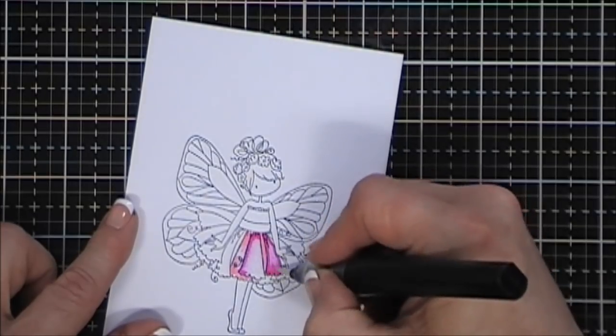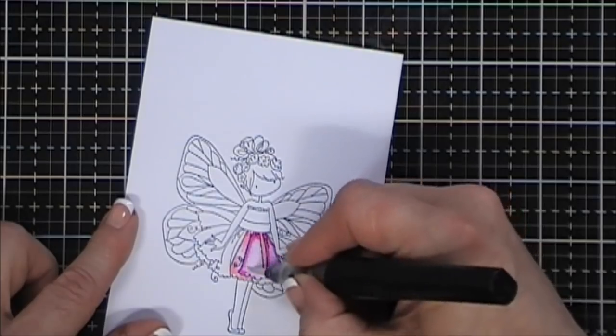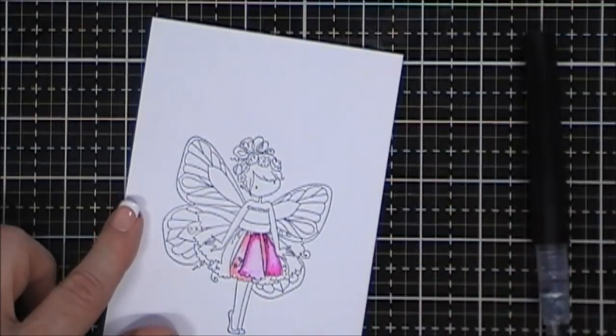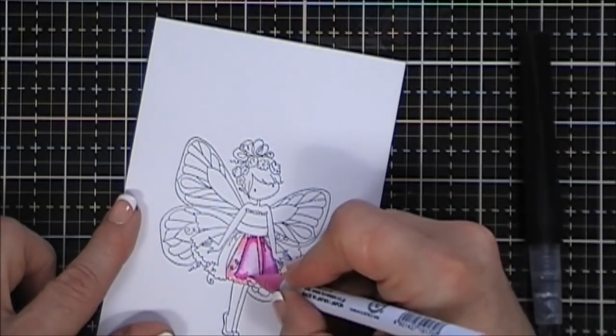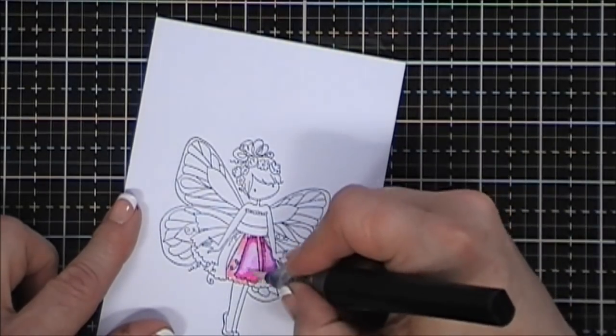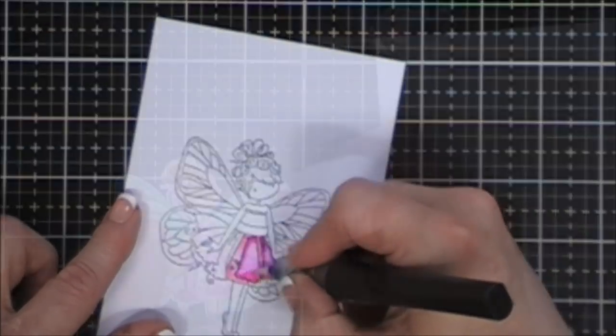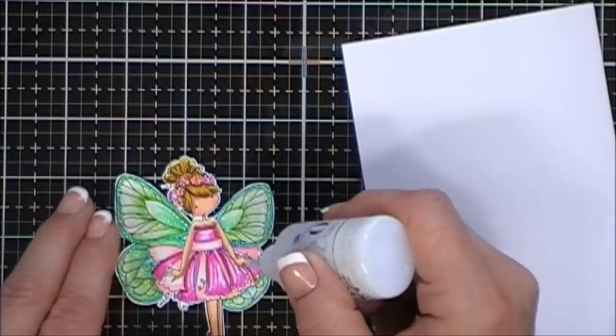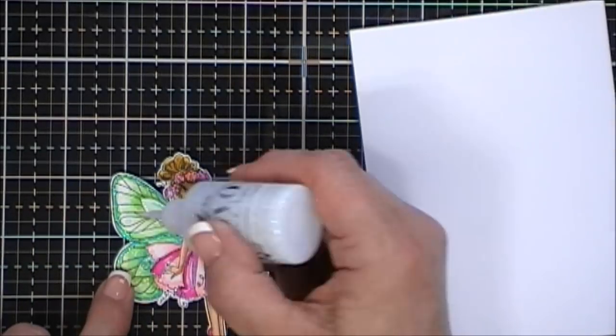After I have her all colored in, I'm just going to fussy cut her out. You can see I was having a problem blending out that color, but the outcome—I think she turned out really pretty. But again, hindsight, I think I probably would use the watercolor cardstock.